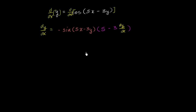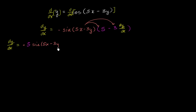It's just going to be a little bit of algebra to work through. We can distribute the negative sine of 5x minus 3y. So dy/dx is equal to: distributing, we get negative 5 times sine of 5x minus 3y. And then negative times negative gives a positive, so plus 3 times the sine of 5x minus 3y times dy/dx.